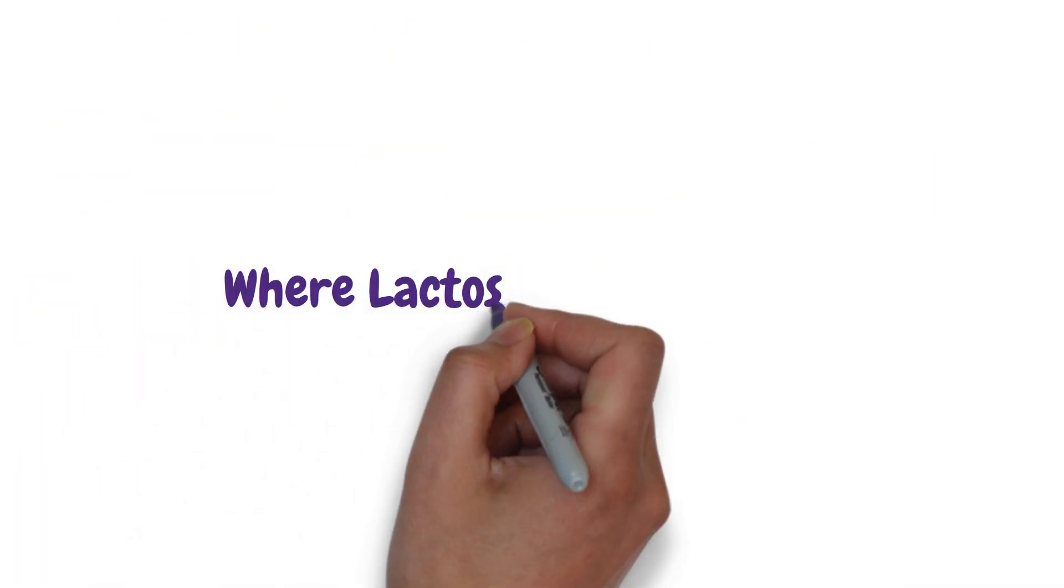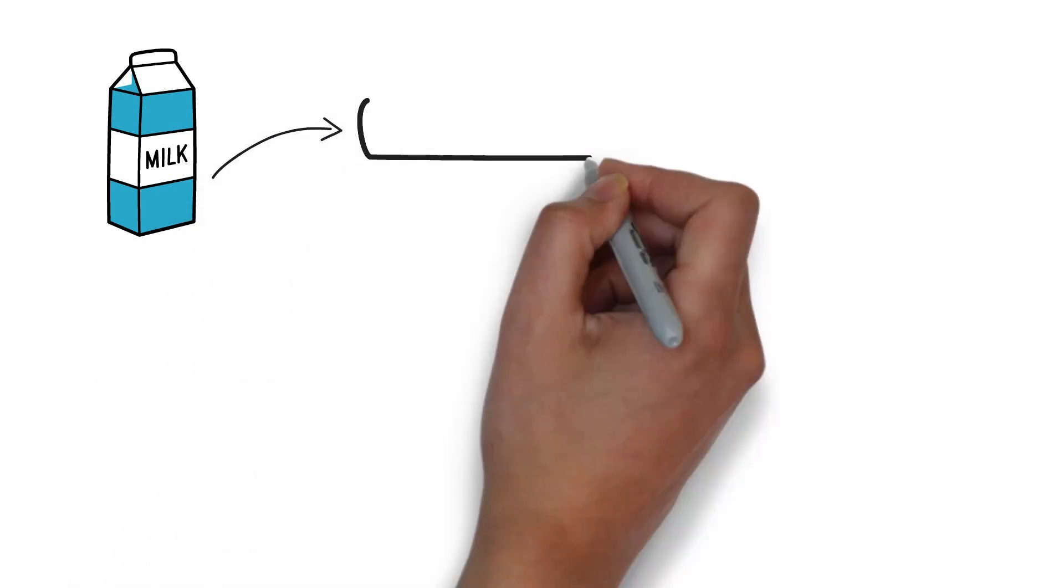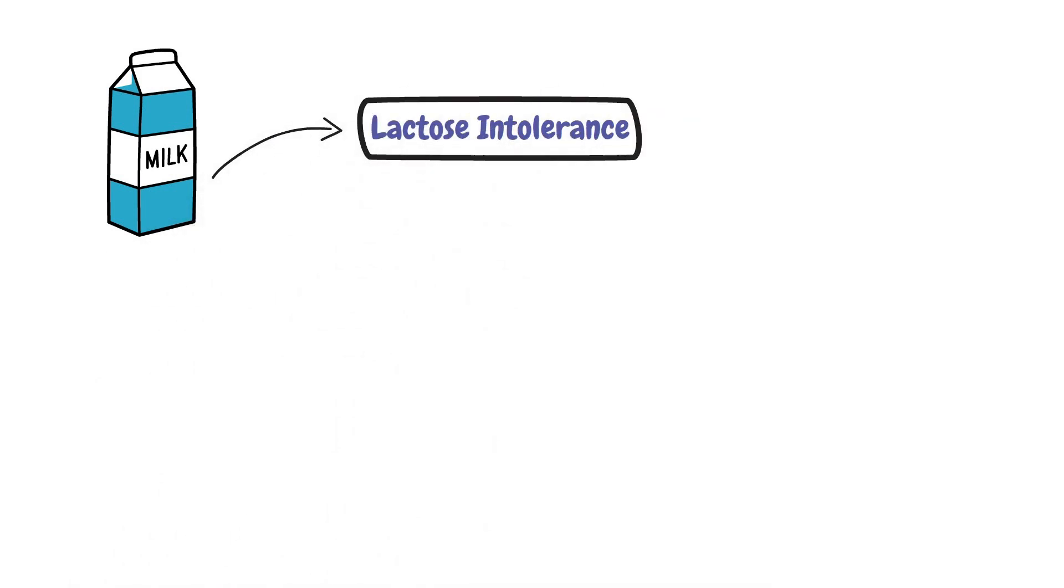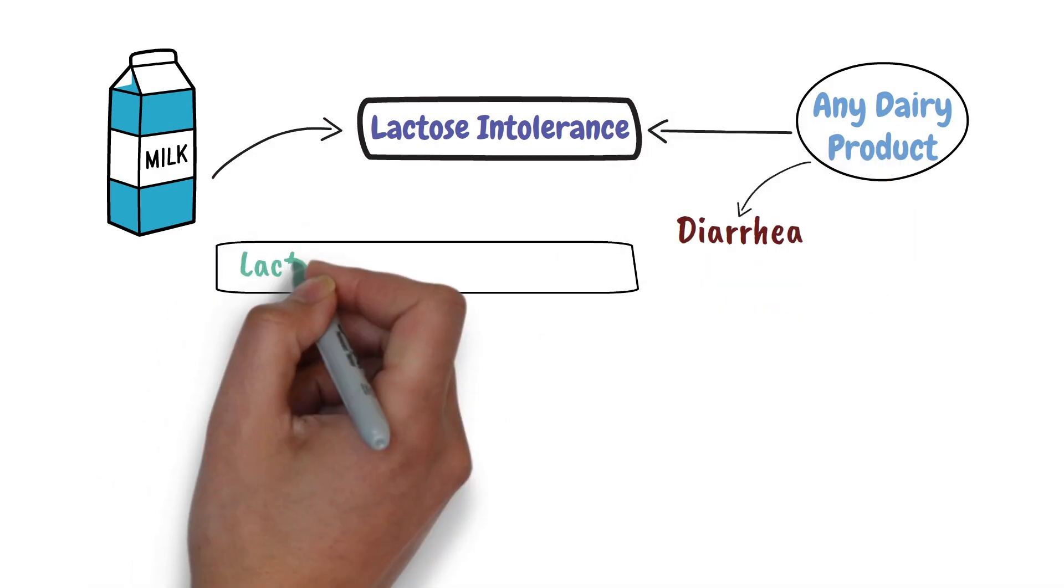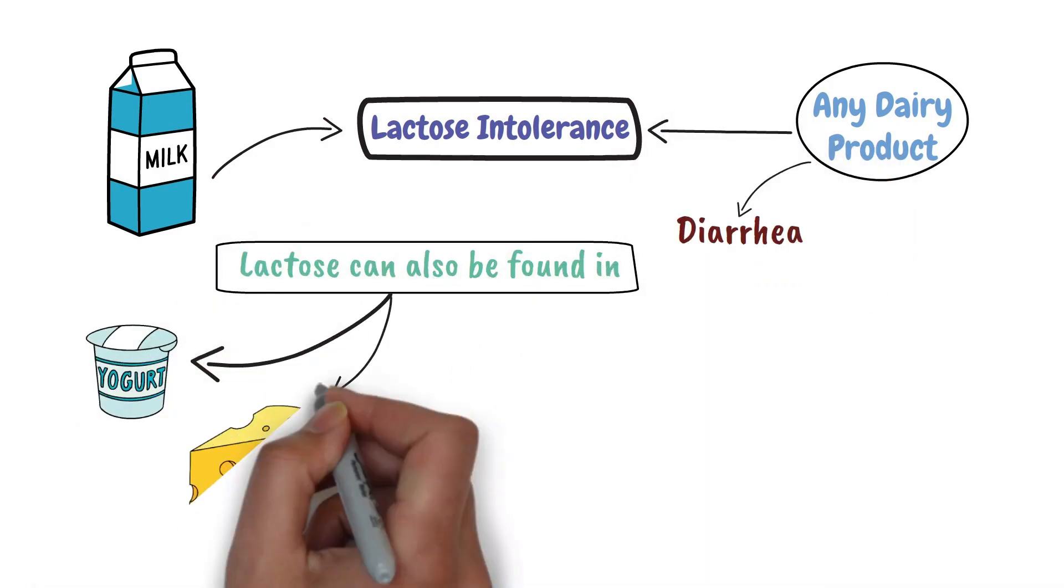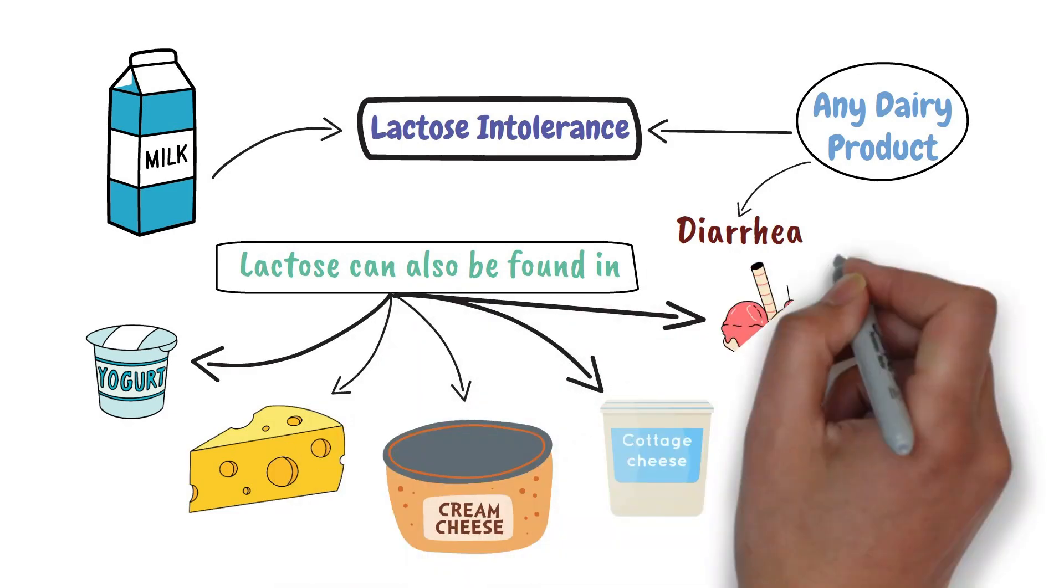So where does lactose usually hide? Although milk is most associated with lactose intolerance, any dairy product may cause diarrhea and other symptoms. Lactose can also be found in yogurt, cheese, cream cheese, cottage cheese, and ice cream.